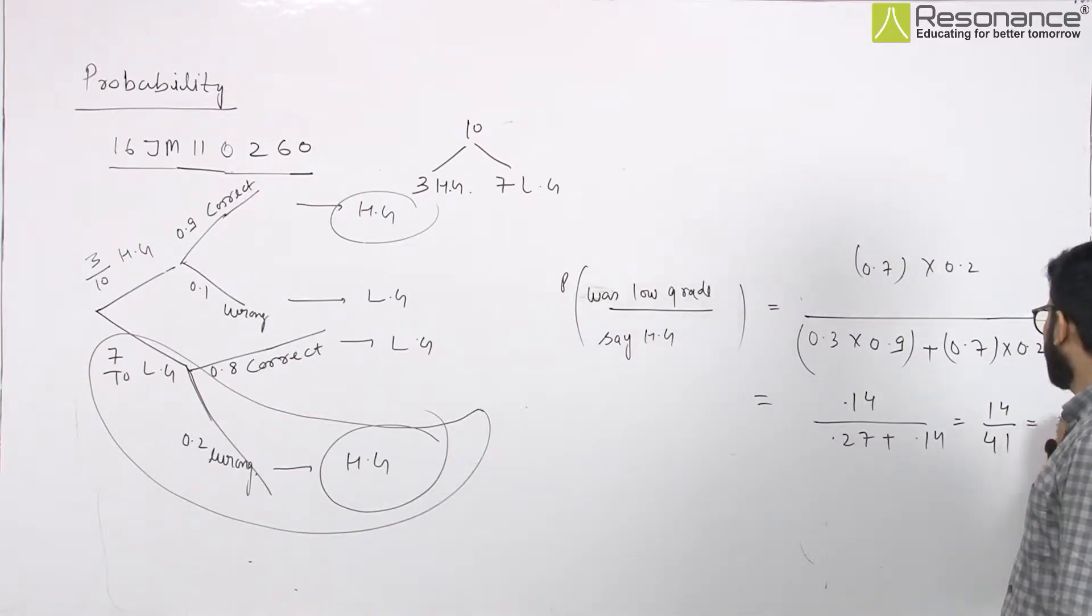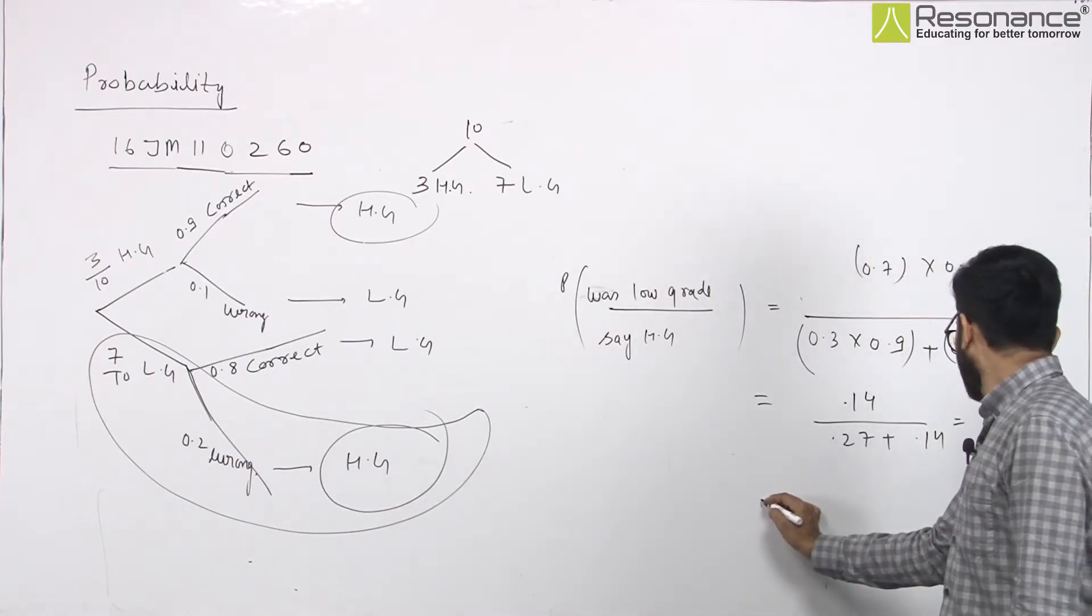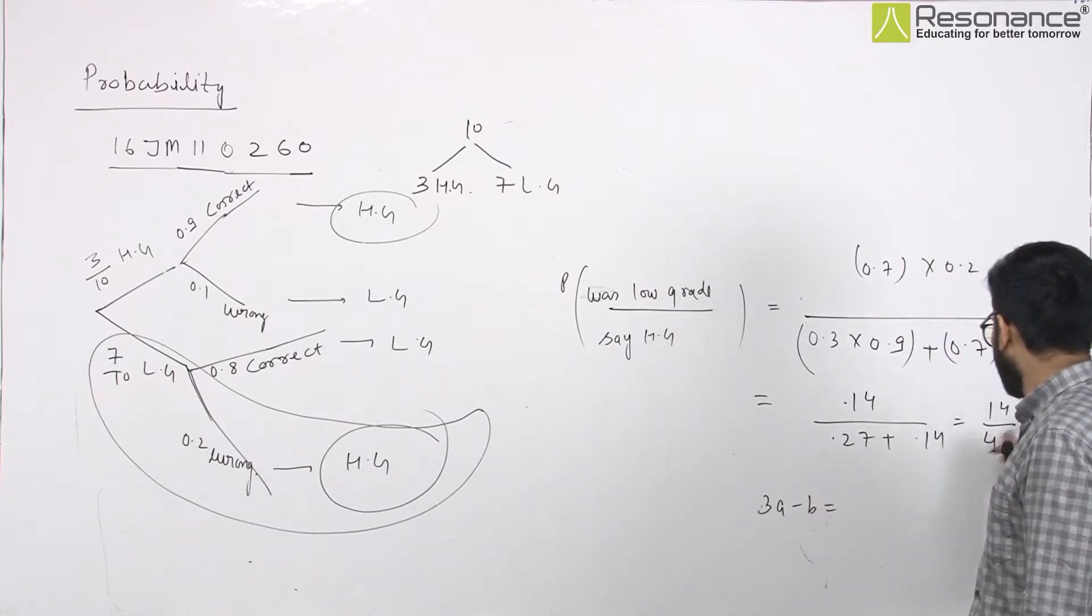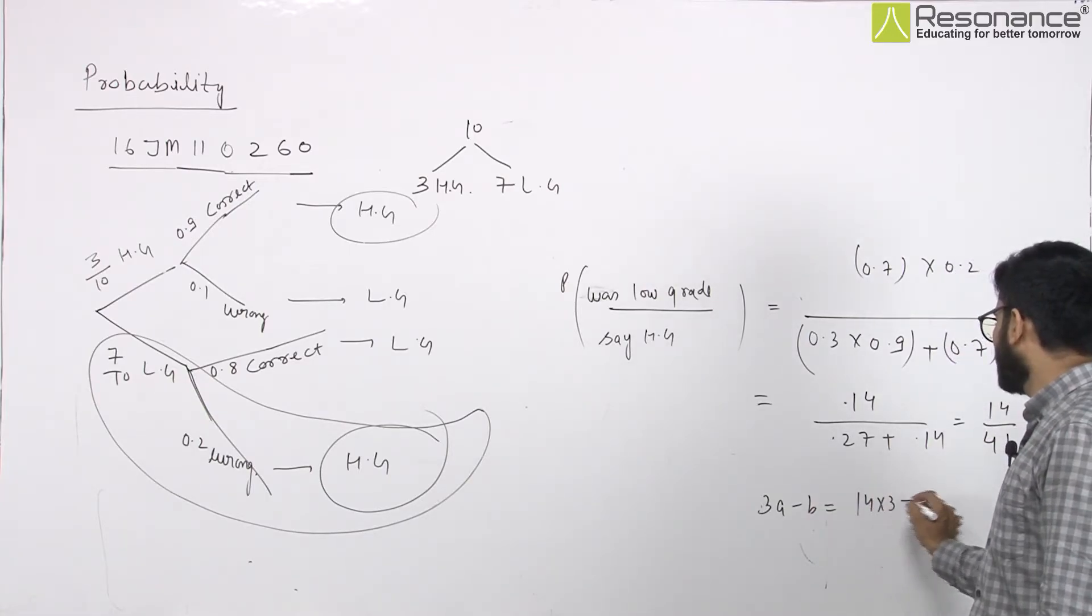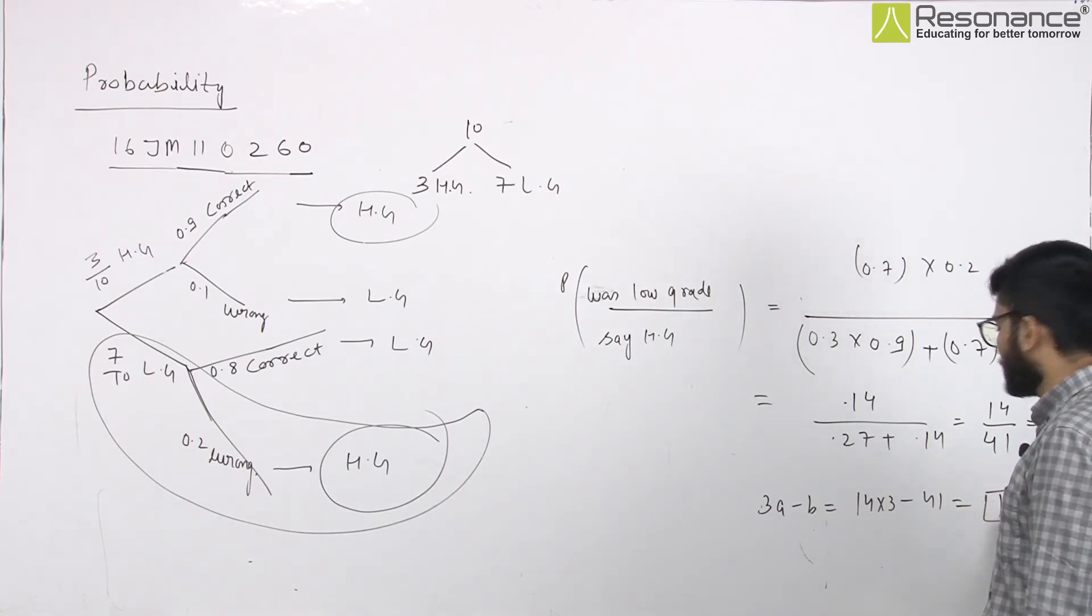This will become, and this is the value that is the co-prime number in the form of a by b, and this will not be cancelled. So we asked, what is 3a minus b? So 3a, how much will it be? 14 into 3 minus 41. This means 42 minus 1, 1. So what will it be? Answer.